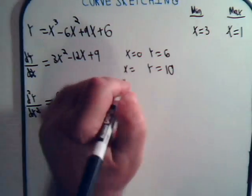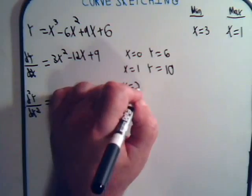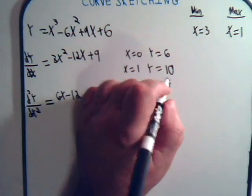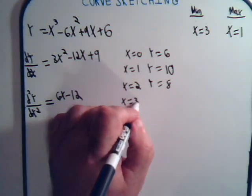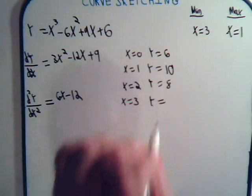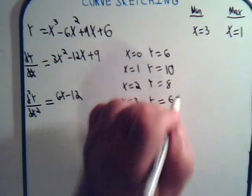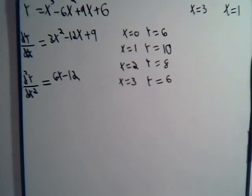Our possible point of inflection. x equals 2, y equals 8. Our minimum point. x equals 3 for our local minimum point, we should say. And once again, y comes out to equal 6. So, let's see if we can do a rough graph of this.